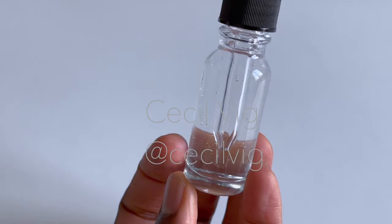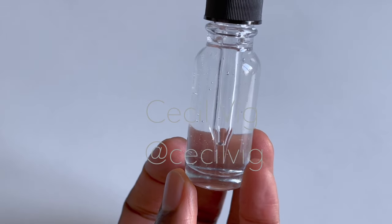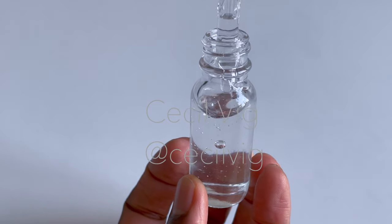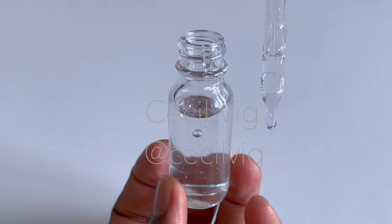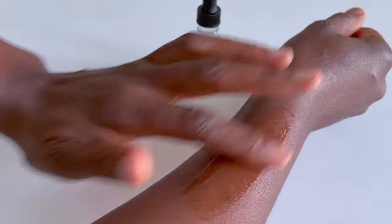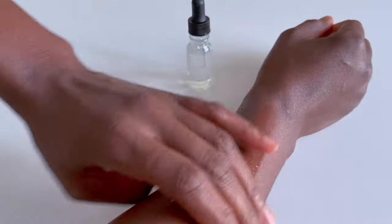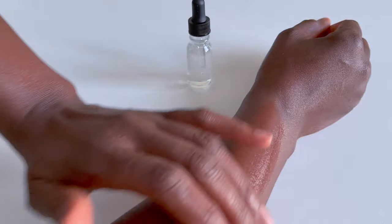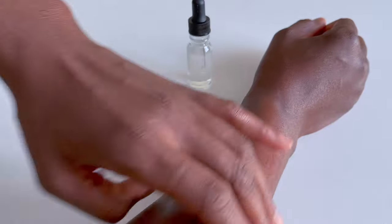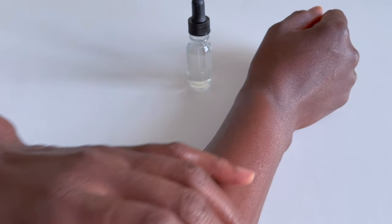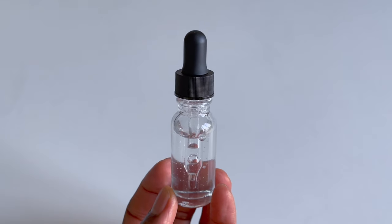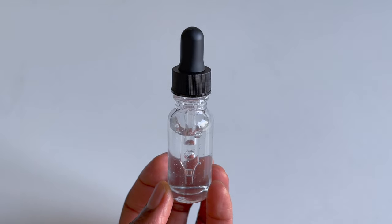This face and neck serum with 10% niacinamide, allantoin, urea, D-panthenol, and hyaluronic acid is ideal for all skin types and colors. It revitalizes tired and dull skin, smooths the skin, reduces wrinkles, dries out acne, clears blemishes, evens skin tone, and keeps the skin moisturized at all times. After application on the face and the neck area, allow it to fully absorb into the skin and then apply your moisturizer as needed.